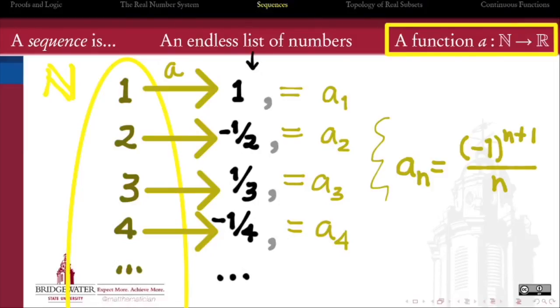This sequence, for example, we can express as the formula a_n = (-1)^(n+1)/n. Not every sequence has a nice closed formula for it, but this particular example happens to.